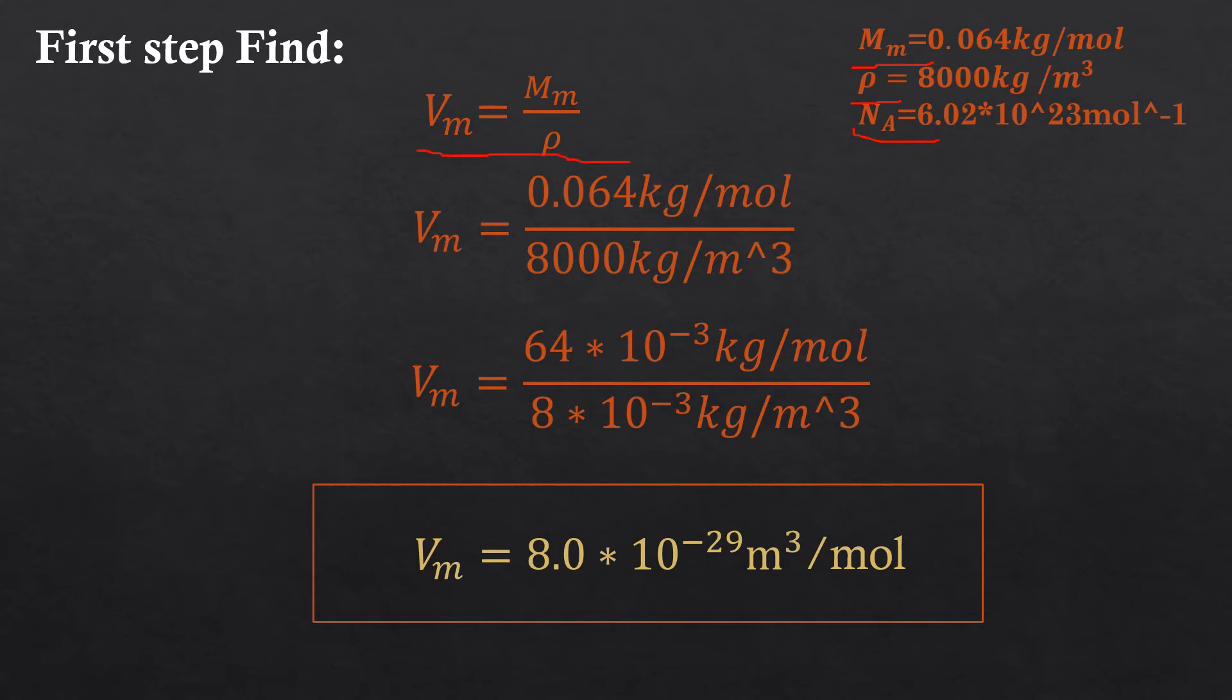Here, the first formula: molar volume equals molar mass over density. We have molar mass, put it here, and we have density, put it here. By dividing molar mass by density, we will find the molar volume. Here it will equal 8.0×10⁻²⁹ m³/mol.